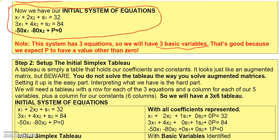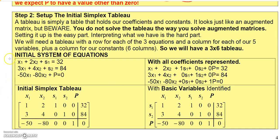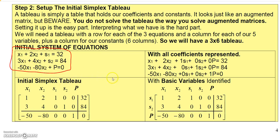The second step is to set up what's called an initial simplex tableau from this system. A tableau is really a matrix, but we don't call it that. When we set it up, we're going to put this in matrix form. I need to label a column for each variable — a column for x1, x2, S1, S2, P, and then a column for the constants. It's just like setting up an augmented matrix for solving a system of equations.